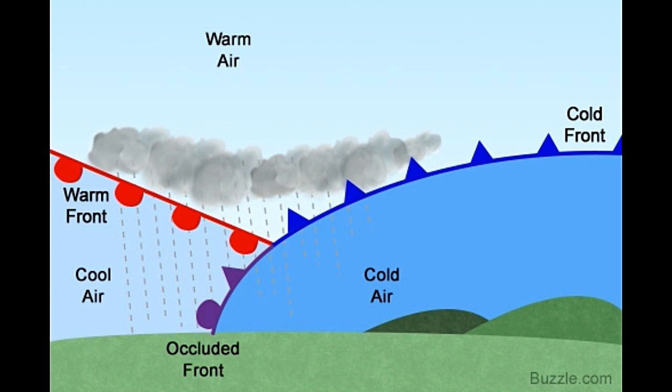Occlusions are further classified into two types: warm occlusion and cold occlusion. When the mass of air that lies behind an occluded front is warmer than the air mass which lies in front of the occluded front, it is a case of warm occlusion. On the other hand, if the mass of air which lies behind the occluded front is colder than the air mass that lies in front of the occluded front, then it is known as cold occlusion. Formation of a warm occlusion is a rare phenomenon as compared with the chances of formation of a cold occlusion.